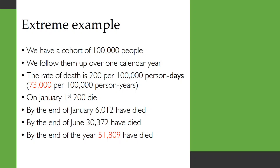Let's take a look at an extreme example to see the difference between risks and rates. We have a cohort of 100,000 people, and we follow them up over one calendar year. In this particularly unlucky cohort, the rate of death is 200 per 100,000 person-days, i.e. 73,000 per 100,000 person-years.